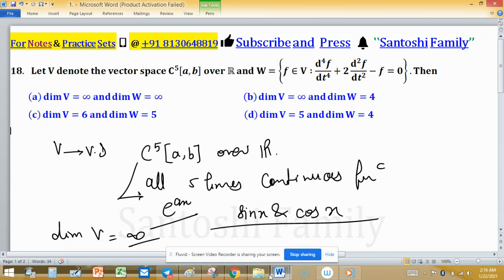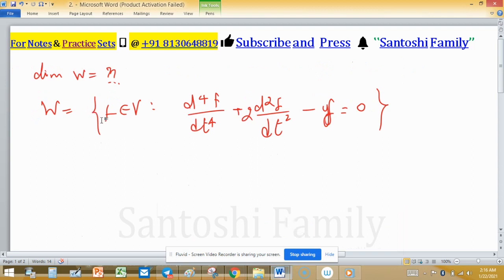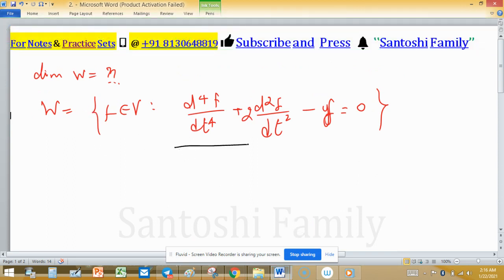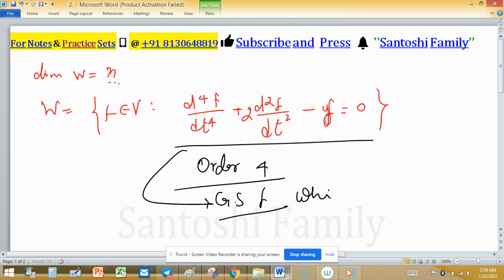Because in W, order of the differential equation is 4, so in the solution set or general solution F which contains four arbitrary constants and these constants will come from field R, we have 4 choice independent.